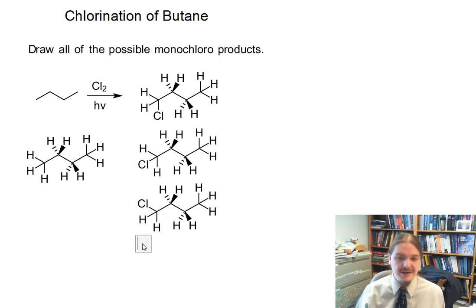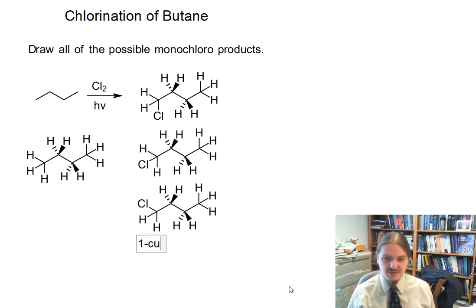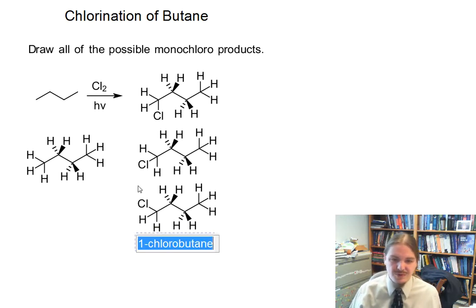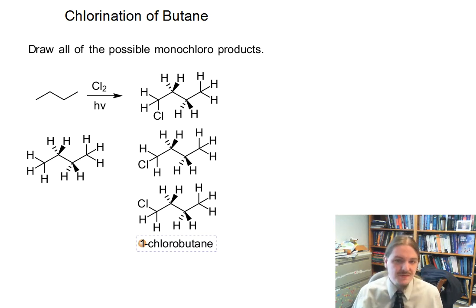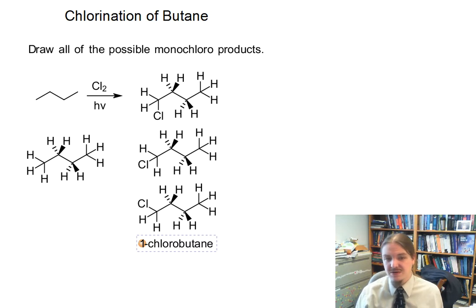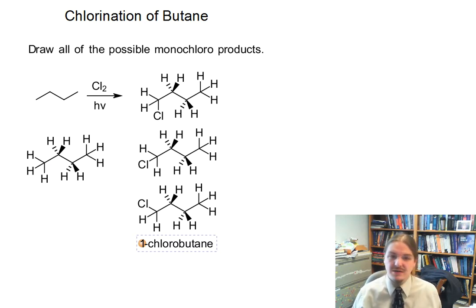If we were to go and name each of these compounds, all of these are 1-chlorobutane — they're actually the same compound. Swapping any of the three hydrogens on the methyl group at the left end of the chain produces the same compound. These three hydrogens are chemically equivalent. Chemical equivalence occurs when hydrogens or groups are chemically indistinguishable from each other — a reaction at one spot produces the exact same product as a reaction at the other. So any of these CH3 hydrogens can be substituted with chlorine and still produce 1-chlorobutane.